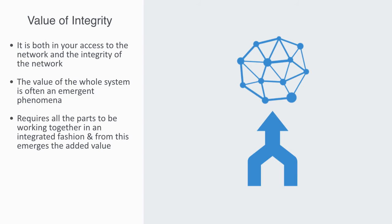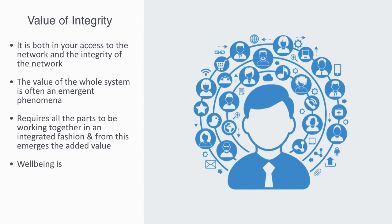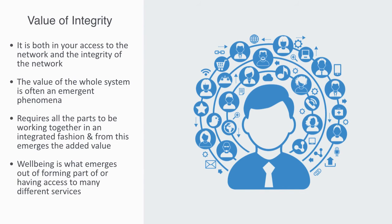This intrinsic conception of value is what we call well-being. Well-being is a very complex phenomenon — the value that it represents is a distributed one. Well-being is not the property of a thing; it is what emerges out of forming part of and having access to many different services: ecosystem services, industrial services, social, cultural, and so on. But it is also in contributing to these systems and co-creating value within them. The value that emerges is a complex interaction of different forms of capital.